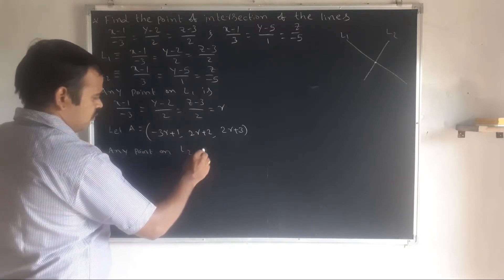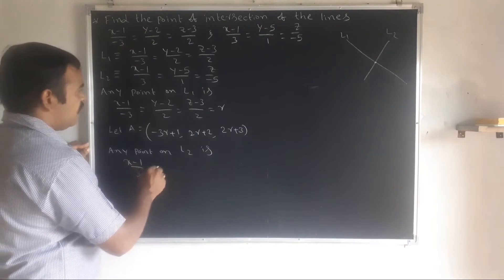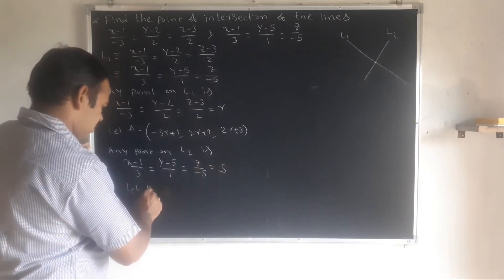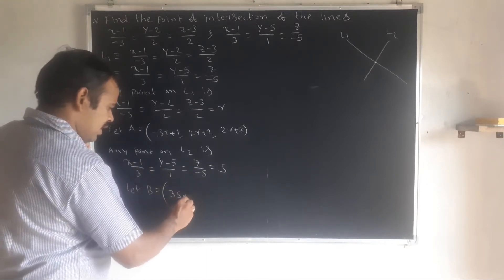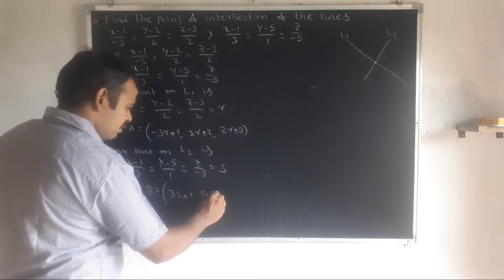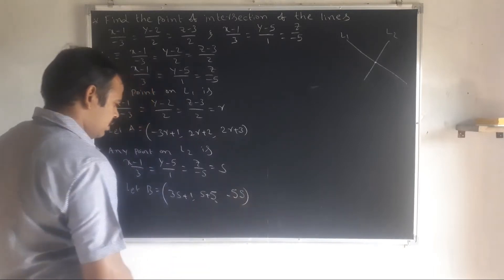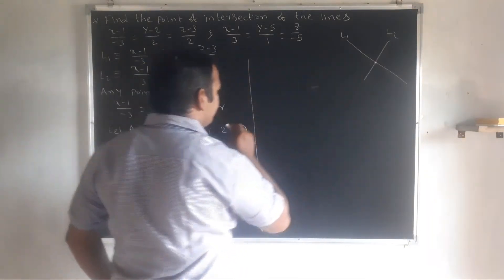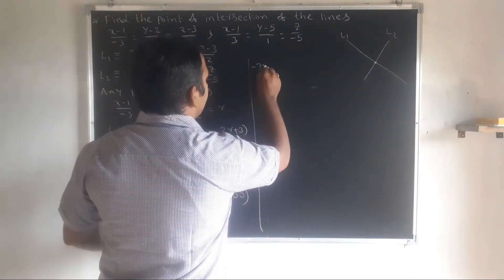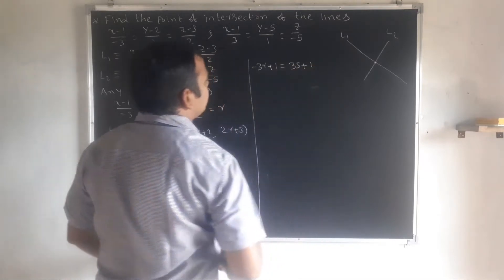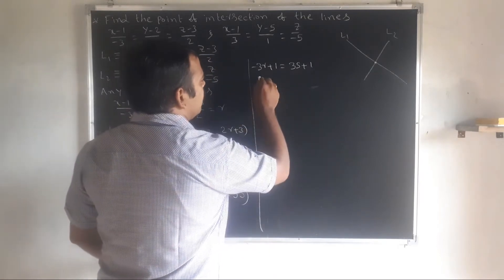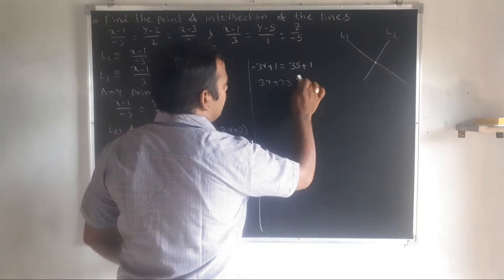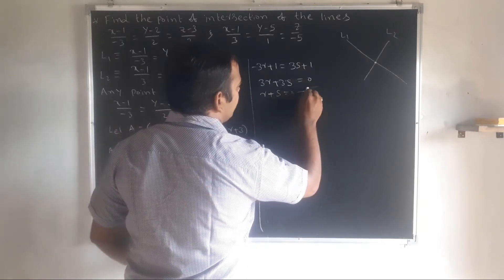For L2, set (x minus 1) over 3 equal to (y minus 5) over 1 equal to z over minus 5 equal to parameter s. Equating x-coordinates: minus 3r plus 1 equal to 3s plus 1, giving minus 3r minus 3s equal to 0, so r plus s equal to 0. This is equation 1.